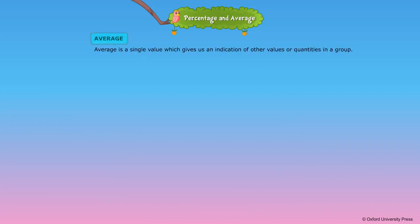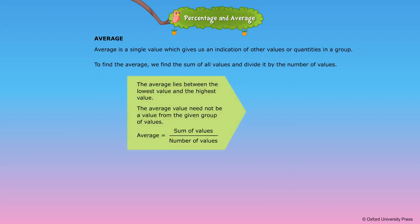Average is a single value which gives us an indication of other values or quantities in a group. To find the average, we find the sum of all values and divide it by the number of values. The average lies between the lowest value and the highest value. The average value need not be a value from the given group of values. Average equals sum of values divided by the number of values.